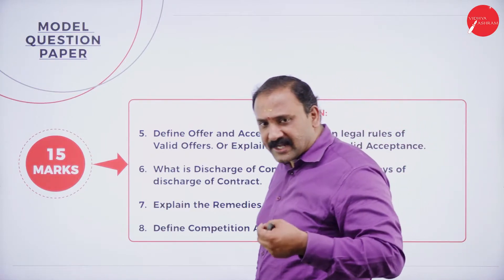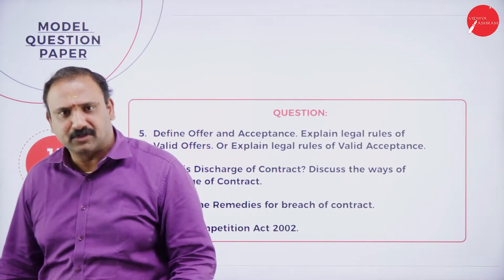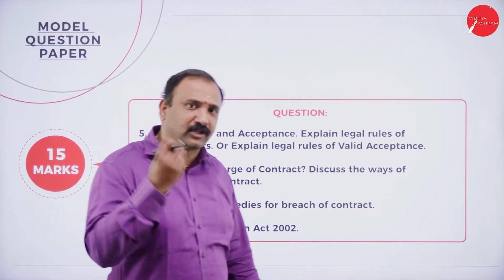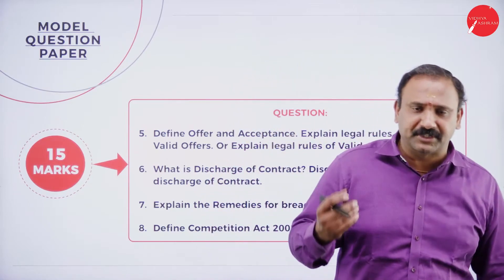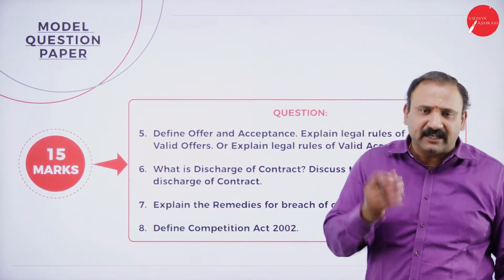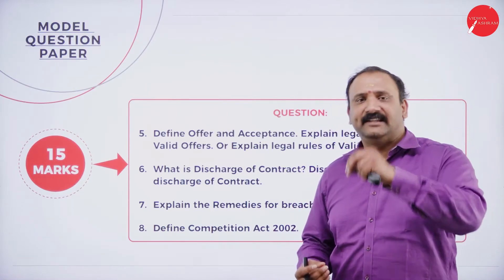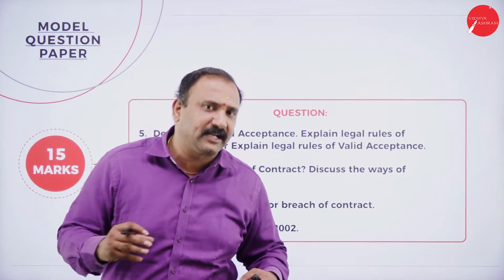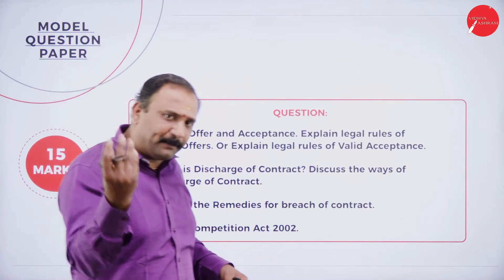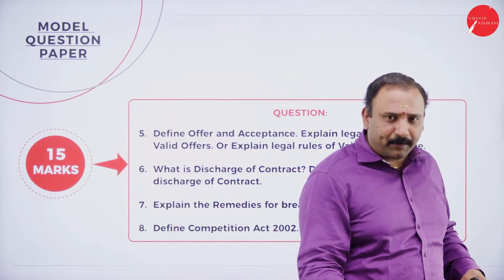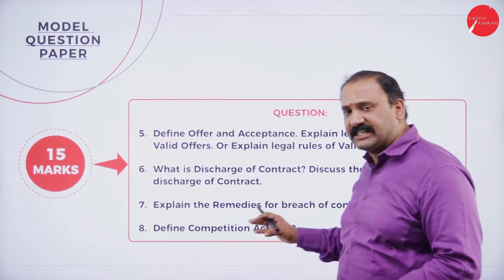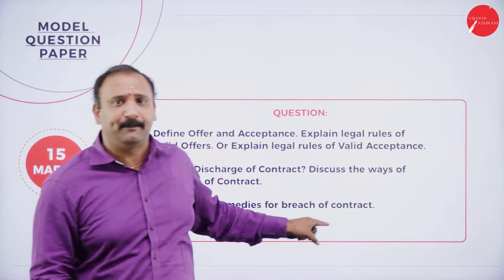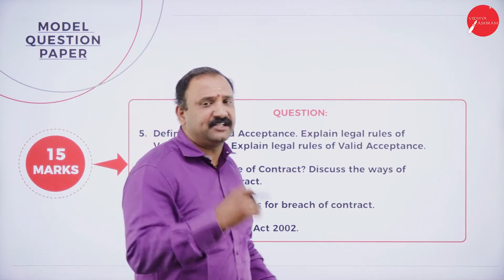Examples of companies dealt with under the Competition Act include Amazon, Google, Pepsi, and Paytm. Many companies in India have been subjected to CCI action because they tried to choke the market, prevent other players from entering, or hold a monopoly — whether through pricing, advertising, monopoly practices, or cartel formation. All these are considered against the natural rules of competition, and answers can be elaborated using these examples.